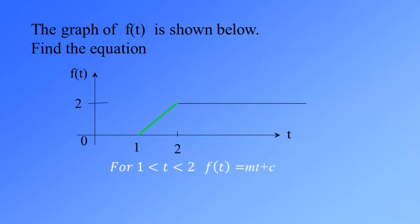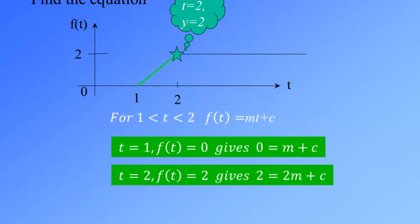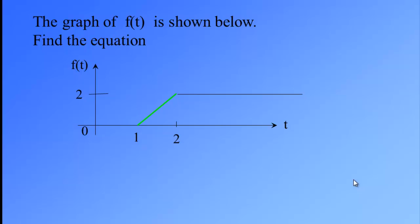Then we choose another point: when t = 2, f(t) = 2. Substituting into f(t) = mt + c, we get 2 = 2m + c. Solving the two simultaneous equations, we get m = 2 and c = −2. Therefore, the equation of the straight line for t between 1 and 2 is f(t) = 2t − 2.